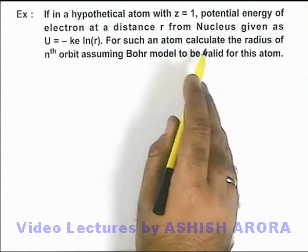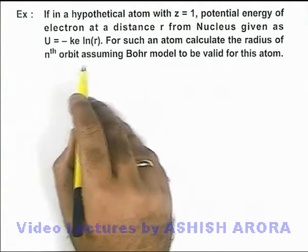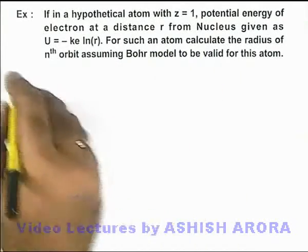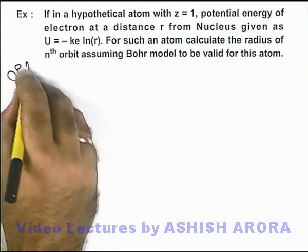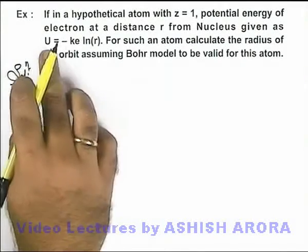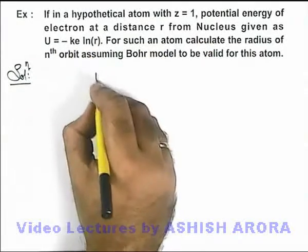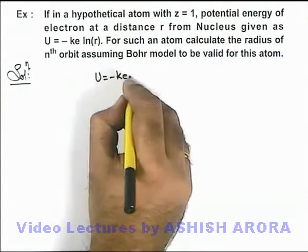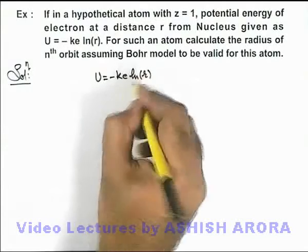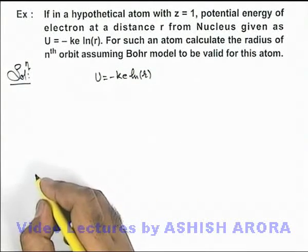For such an atom, we need to calculate the radius of the nth orbit assuming the Bohr model is valid. In this situation, the energy of the electron for binding with the nucleus is given as -ke natural log of the distance of the electron from the nucleus.